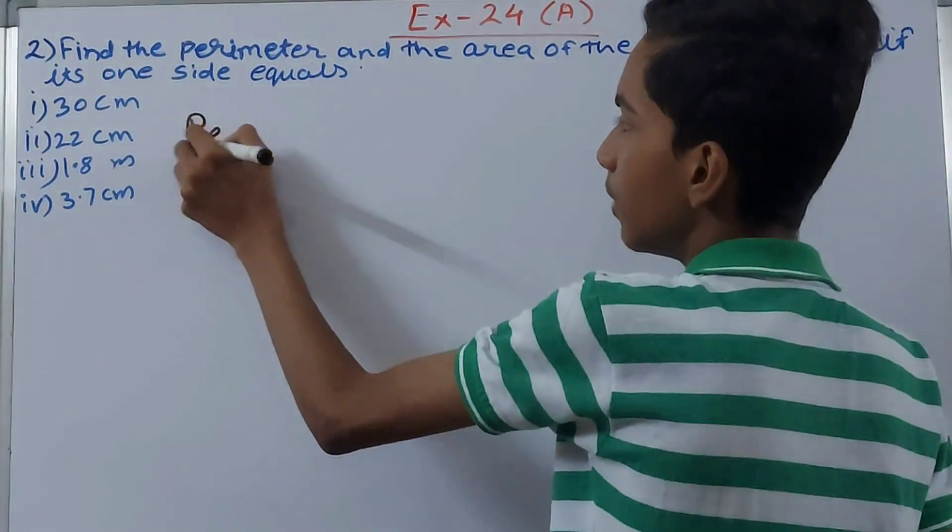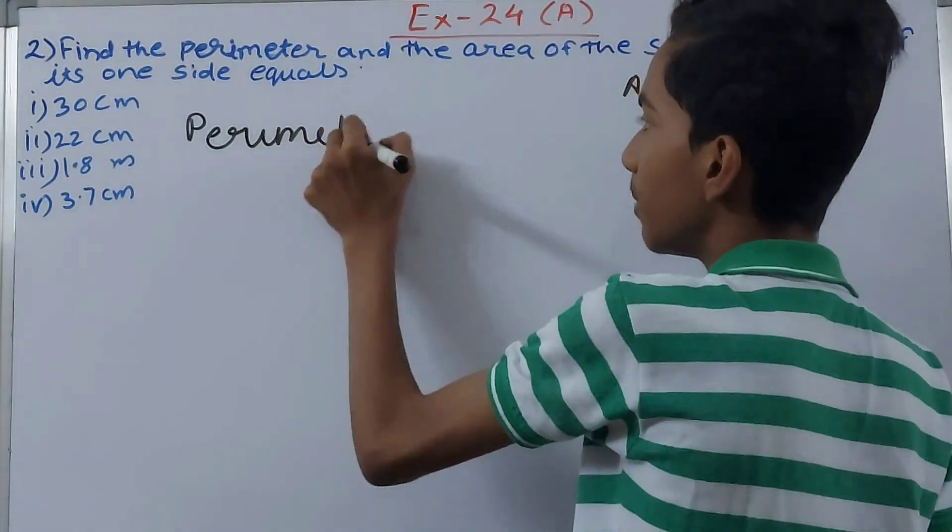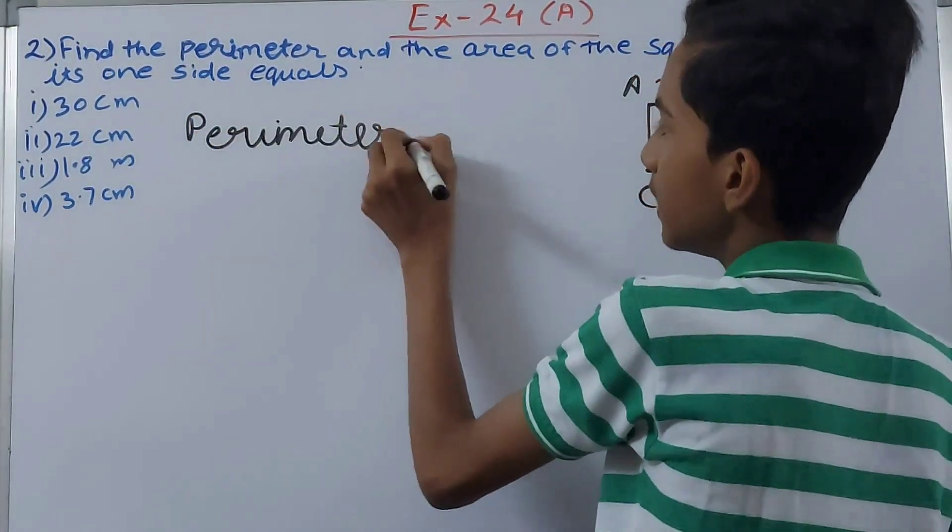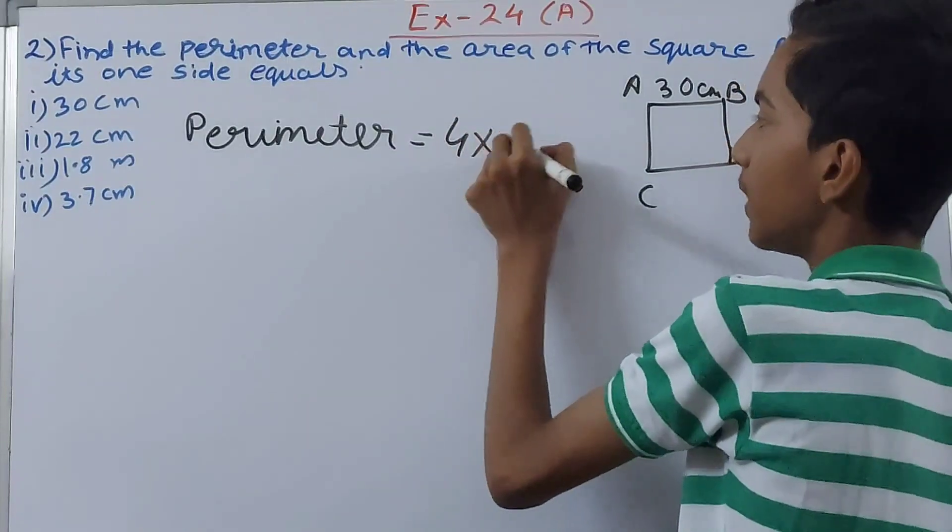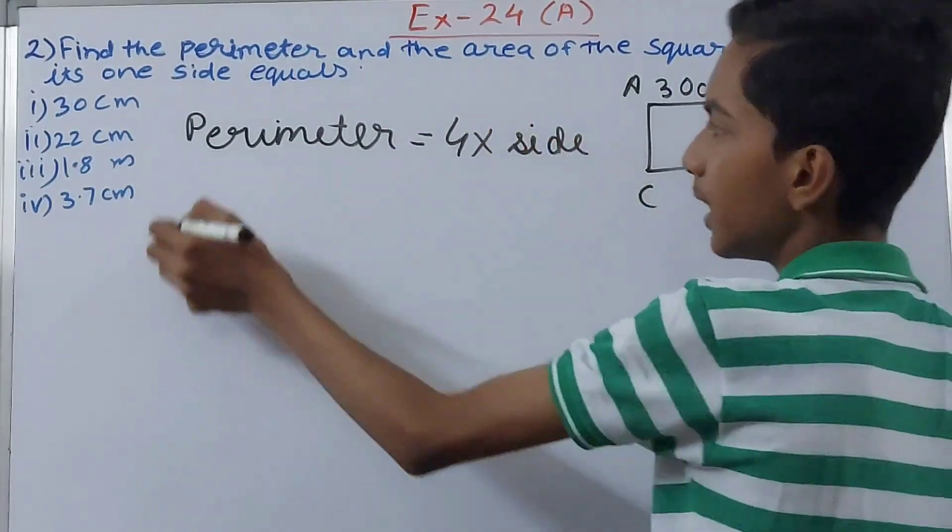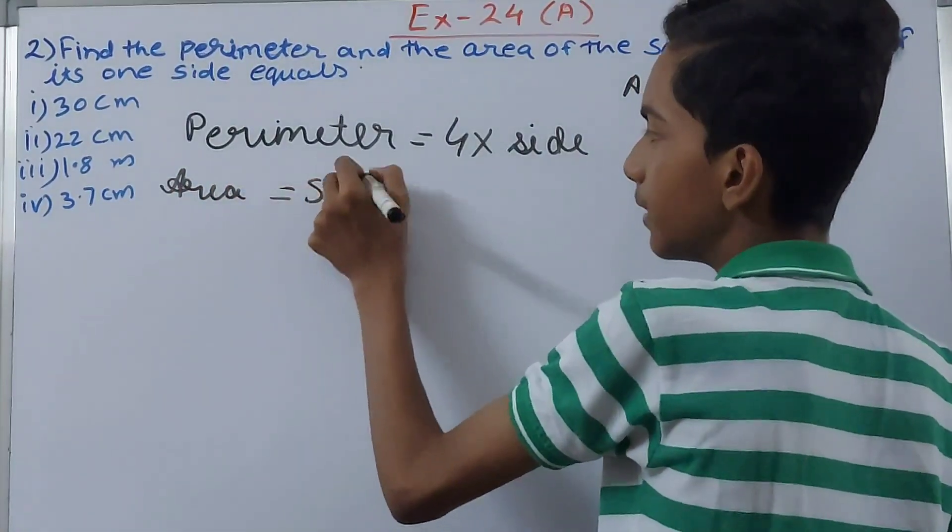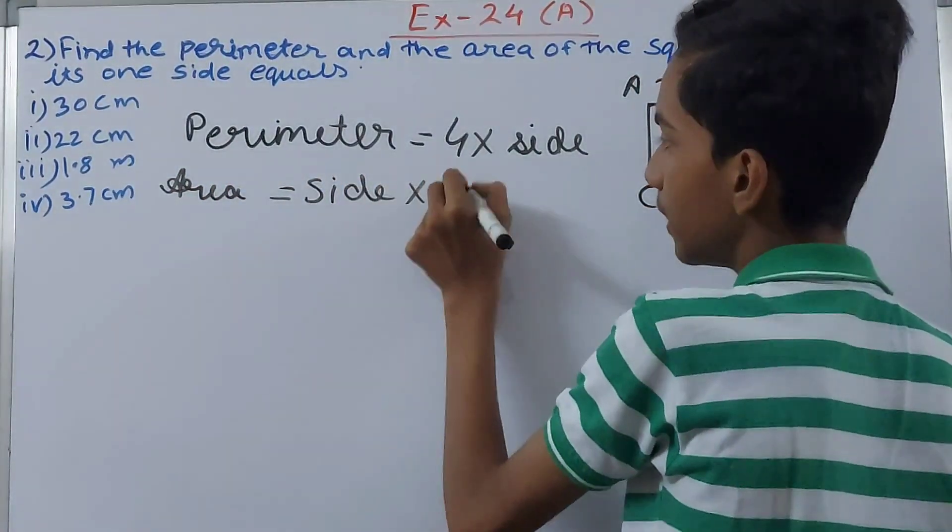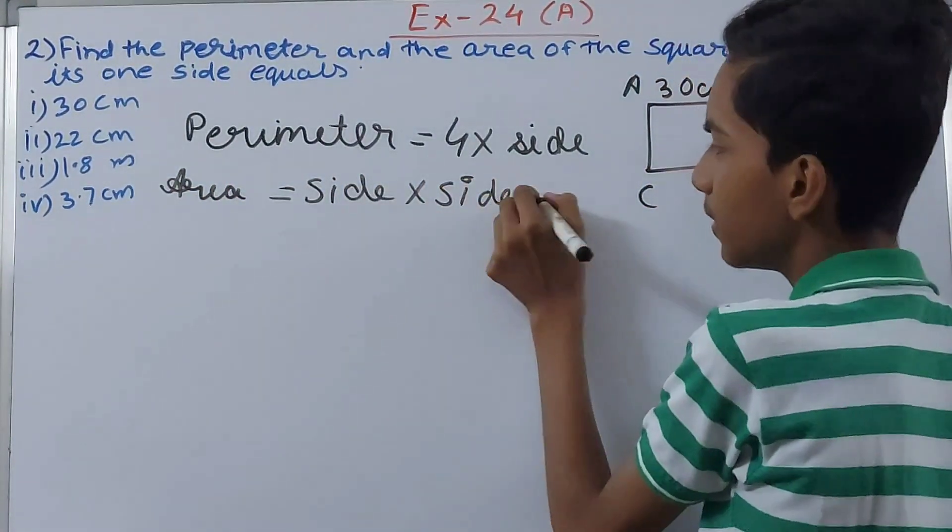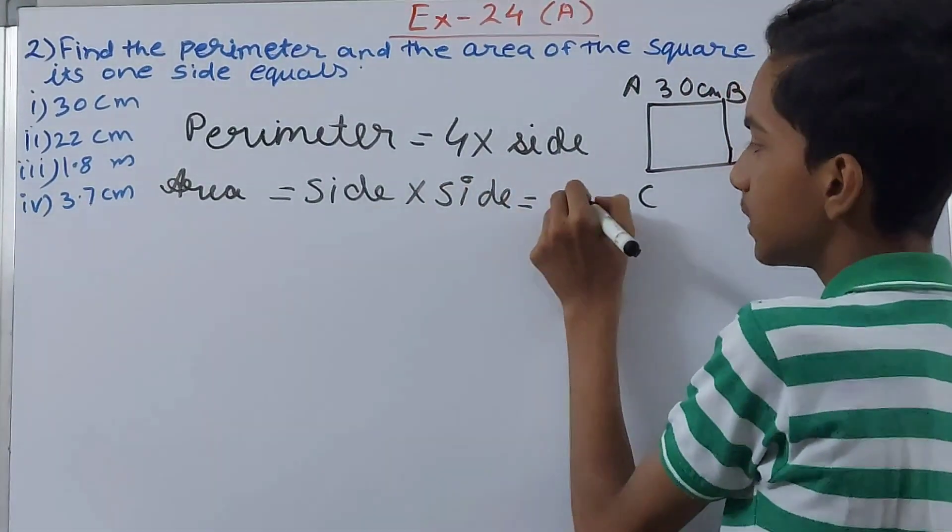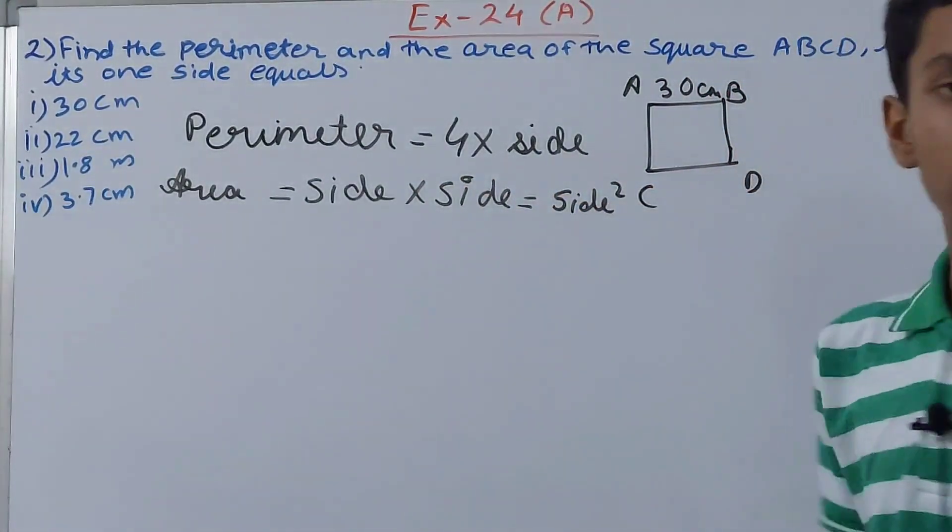So first of all we'll know what is the formula. Perimeter is 4 into side, and area is equal to side into side, or you can even say this as side square.